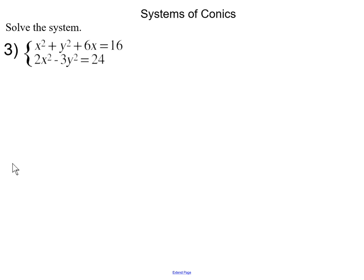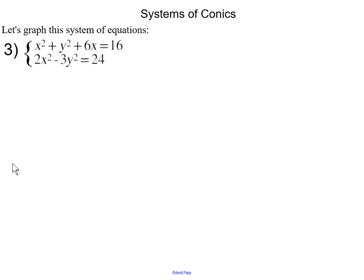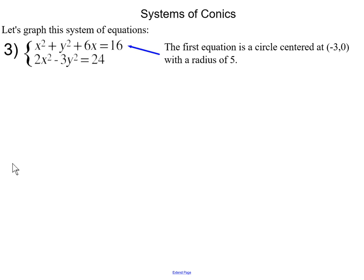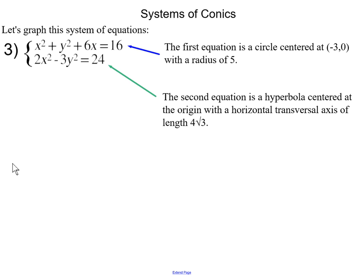Problem number three: we have this system of conics. I'll give you a moment to pause and work it out on your own. To determine the number of possible solutions, let's graph them. The first equation is a circle centered at (negative 3, 0) with a radius of 5. The second equation is a hyperbola centered at the origin with a horizontal transverse axis of length 4 radical 3.